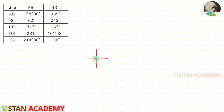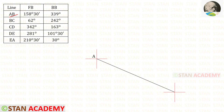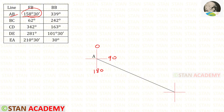Now let us start drawing the traverse. First, let us draw the direction symbol and keep this station as A. The fore bearing of AB is given as 158°30'. We know that 0° is at north and 90° is at east — 158° comes between 90° and 180°, so we draw the line in between them.